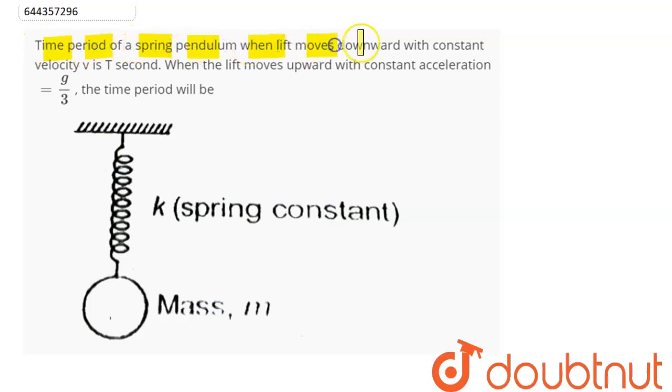...when lift moves downward with constant velocity v each t second. When the lift moves upward with constant acceleration of g by three, the time period will be. So as we know, for a spring pendulum there are two cases mentioned here.